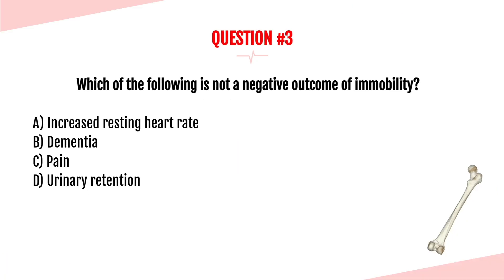Question number three. Which of the following is NOT a negative outcome of immobility? A, increased resting heart rate; B, dementia; C, pain; or D, urinary retention? The answer is B, dementia. Dementia is a chronic problem that develops over time and is not caused by immobility. This was here to trip you up — delirium, however, can certainly be caused by immobility.